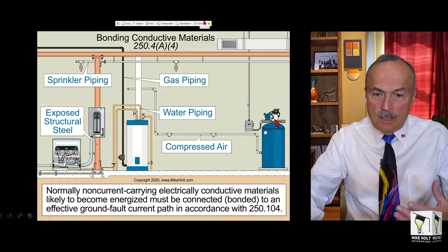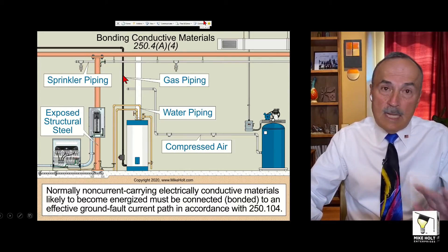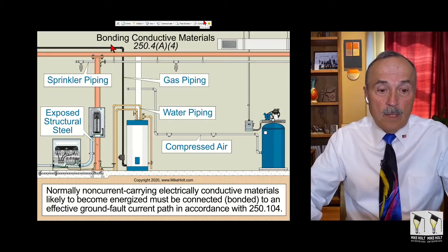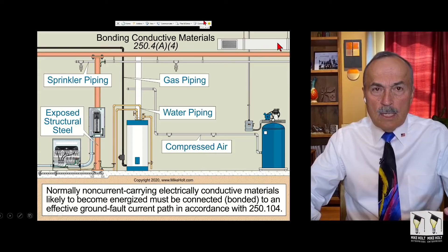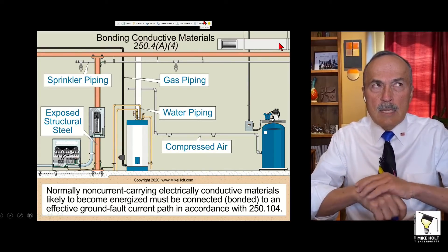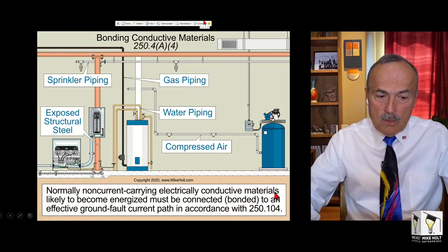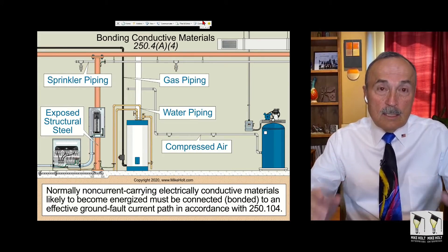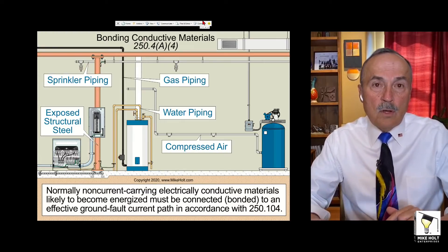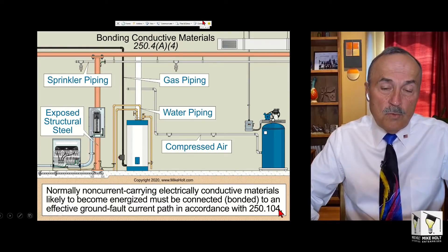If gas piping is connected to a piece of equipment that's all metal and has electricity, then it's likely to become energized. Ductwork, by the way, is not metal ducting and is not required to be bonded. Normally non-current-carrying conductive materials likely to become energized must be connected — bonded — to an effective ground-fault current path, per 250.104.